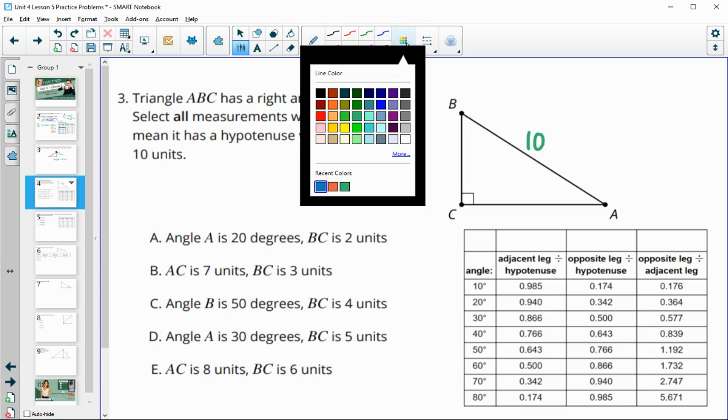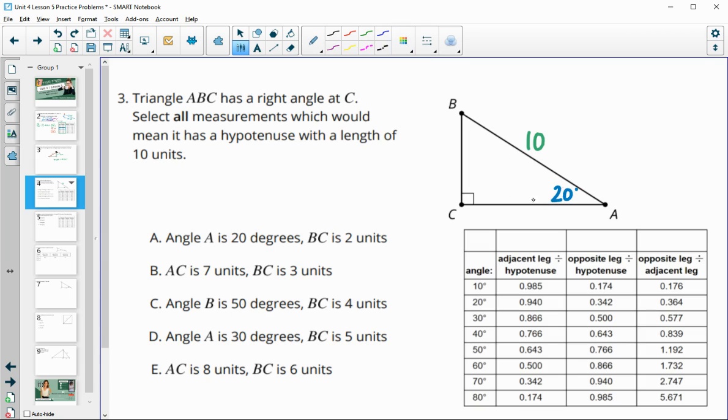Let's take a look here. If angle A were 20, so if this was 20 and BC was 2, would that work together? So now the 2 is the opposite side. We have the opposite side is 2.